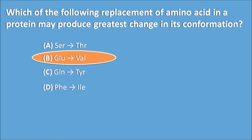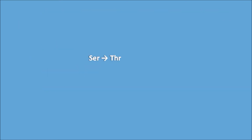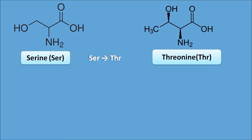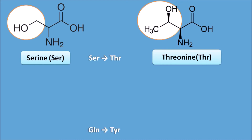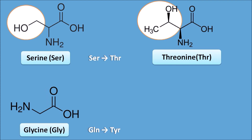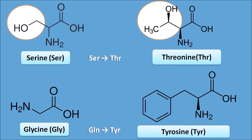For serine to threonine: serine has an OH group as its side chain, and threonine also has an OH group. There is no significant change in polarity when serine is replaced with threonine. For glycine to tyrosine: glycine has no side chain, while tyrosine has a benzene group as its side chain. However, both have non-polar characteristics in this context, and therefore they do not produce the greatest change in conformation.